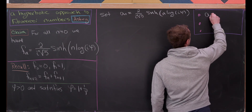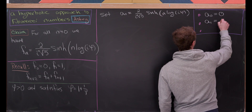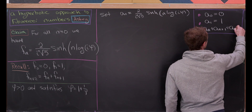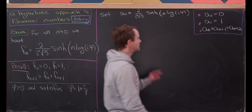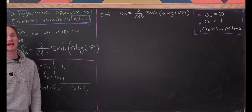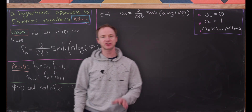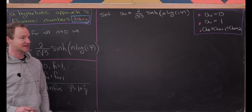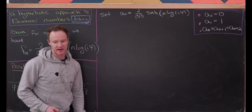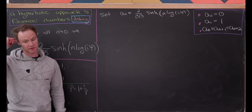We will show three things: first, that A₀ is 0; second, that A₁ is 1; and third, that Aₙ plus Aₙ₊₁ equals Aₙ₊₂. In other words, this sequence has the same seeds and follows the same defining recursion as the Fibonacci sequence. If we can show that, then this must be the Fibonacci sequence, as those conditions uniquely define the sequence 0, 1, 1, 2, 3, 5, 8, 13, and so on.